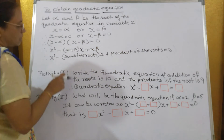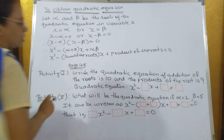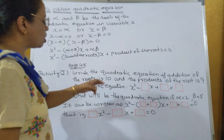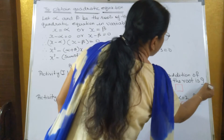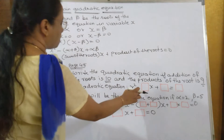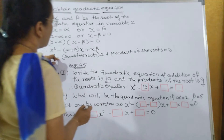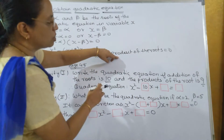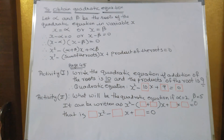This activity is on page number 48. Write the quadratic equation if the sum of the roots is 10 and the product of the roots is 9. Using the formula, the equation becomes x squared minus 10 into x plus 9 equals 0. This is how the equation is formed.